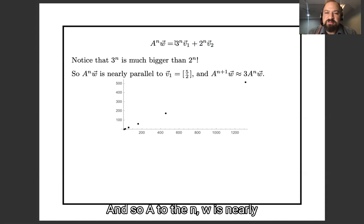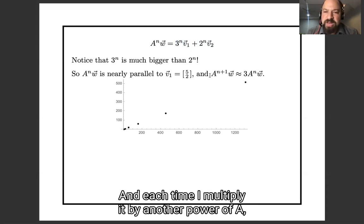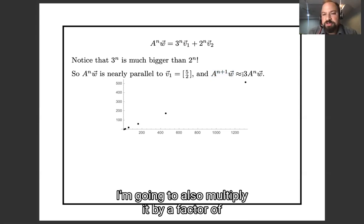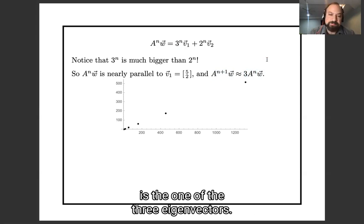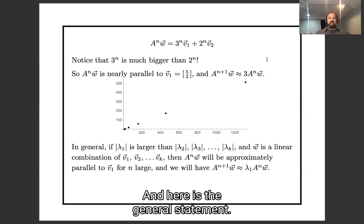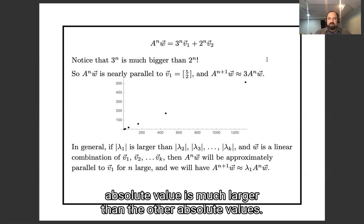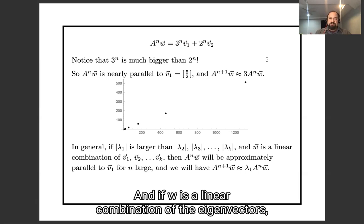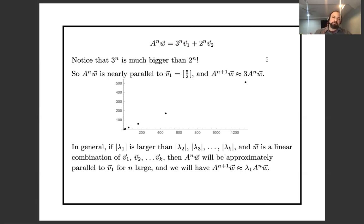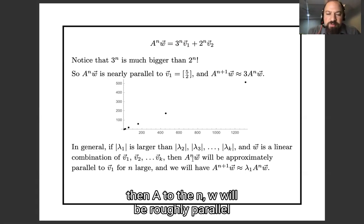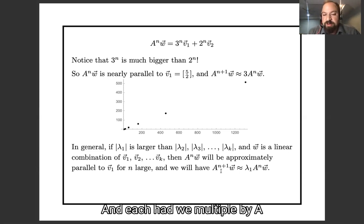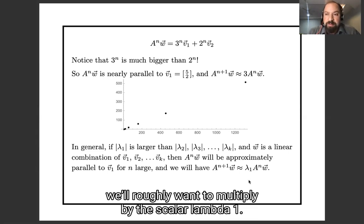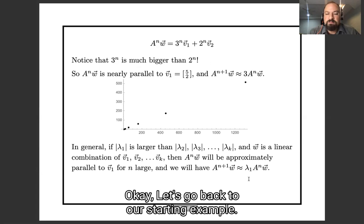And so A^n w is nearly going to be parallel to v₁. And each time I multiply it by another power of A, I'm going to roughly multiply it by a factor of 3, because the dominant term is the one with the 3-eigenvector. Here's the general statement. If I have one eigenvalue which is much larger than the others, or to be careful about it, if its absolute value is much larger than the other absolute values, and if w is a linear combination of the eigenvectors, then A^n w will be roughly parallel to this largest eigenvector, once n is large. And each time we multiply A^n w by a further power of A, we will roughly multiply it by the scalar λ₁.